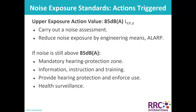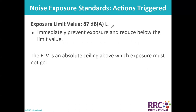If noise is still above 85 dB, mandatory hearing protection zones must be established, along with information, instruction and training; hearing protection must be provided and its use enforced; and health surveillance must be implemented. The Exposure Limit Value is 87 dB — an absolute ceiling above which exposure must not go. If this is exceeded, exposure must immediately be reduced below the limit value.